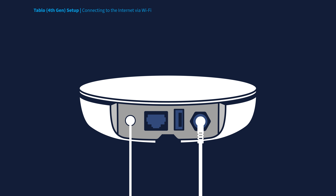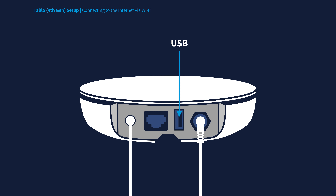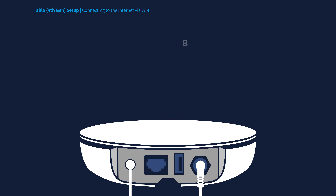To connect your Tablo to your home network wirelessly, first you must make sure that there is nothing plugged into the Ethernet port, as well as the USB port on your Tablo device.